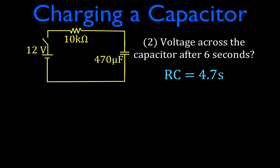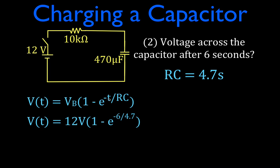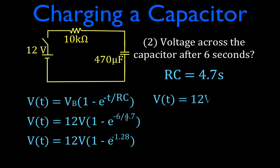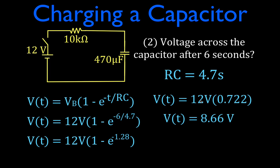Next, we calculate voltage at a specific time: six seconds. Using the same equation with RC equal to 4.7 seconds as the time constant, we get 12 times 1 minus E to the power of minus 1.28. That tells us that after six seconds, the voltage across the capacitor will be 72.2% of the source voltage, which is 8.66 volts.